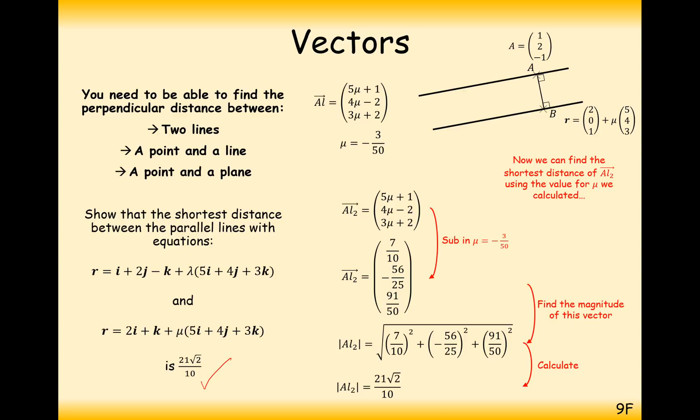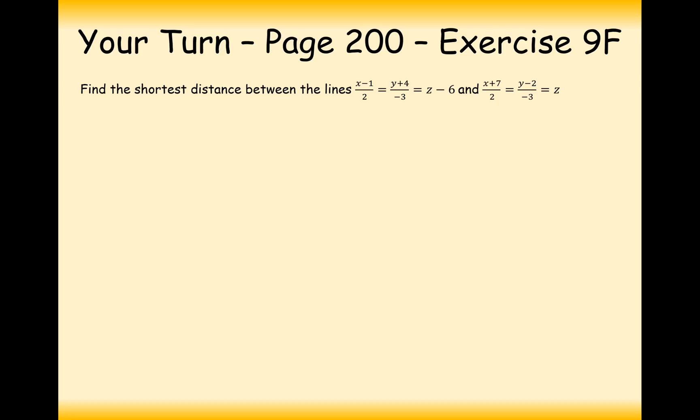So the way we work out the shortest distance between two parallel lines is by working out the shortest distance from a starting coordinate on one of those lines and the equation of the other line. Your turn to have a go at this question here now. Pause the video and try this one out.